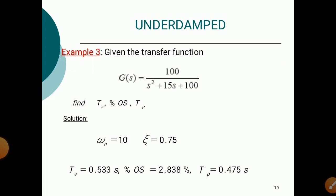Next example: Given G(s) = 100 / (s² + 15s + 100), find Ts, percentage OS, and Tp. Comparing equations: ωn = 10 and ζ = 0.75. Substituting into the formulas: Ts = 0.533 seconds, percentage OS = 2.838%, and Tp = 0.475 seconds.